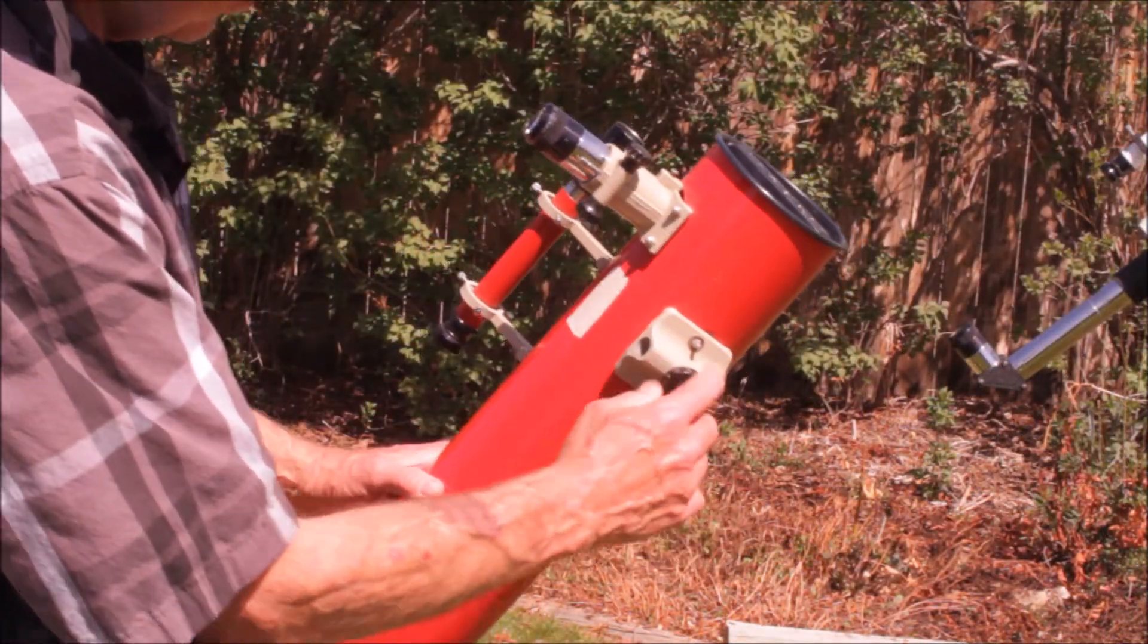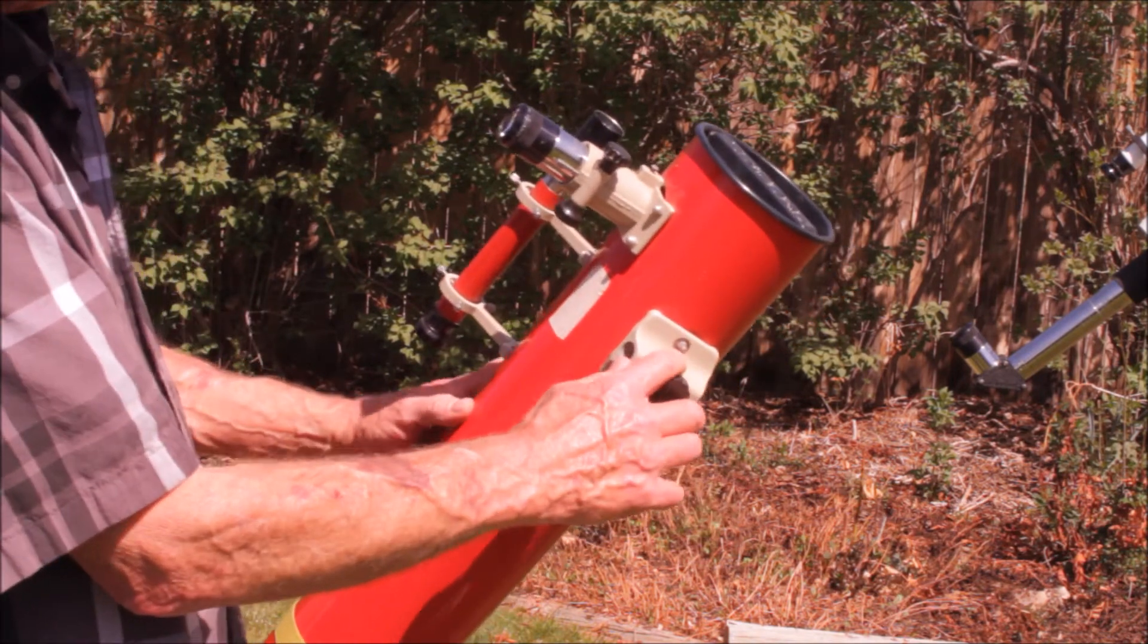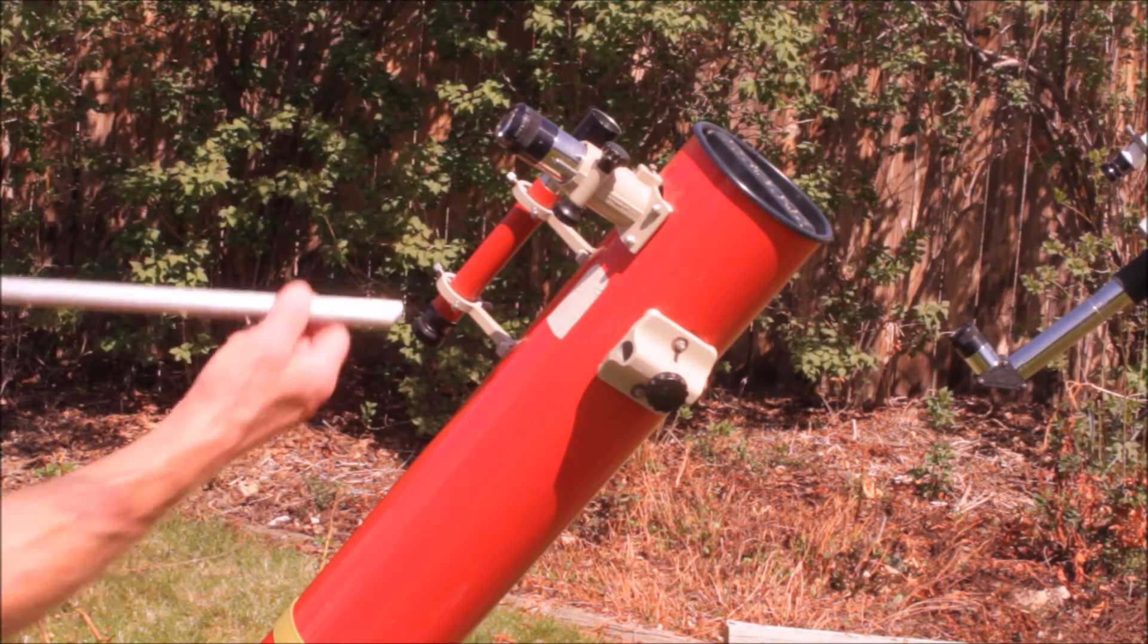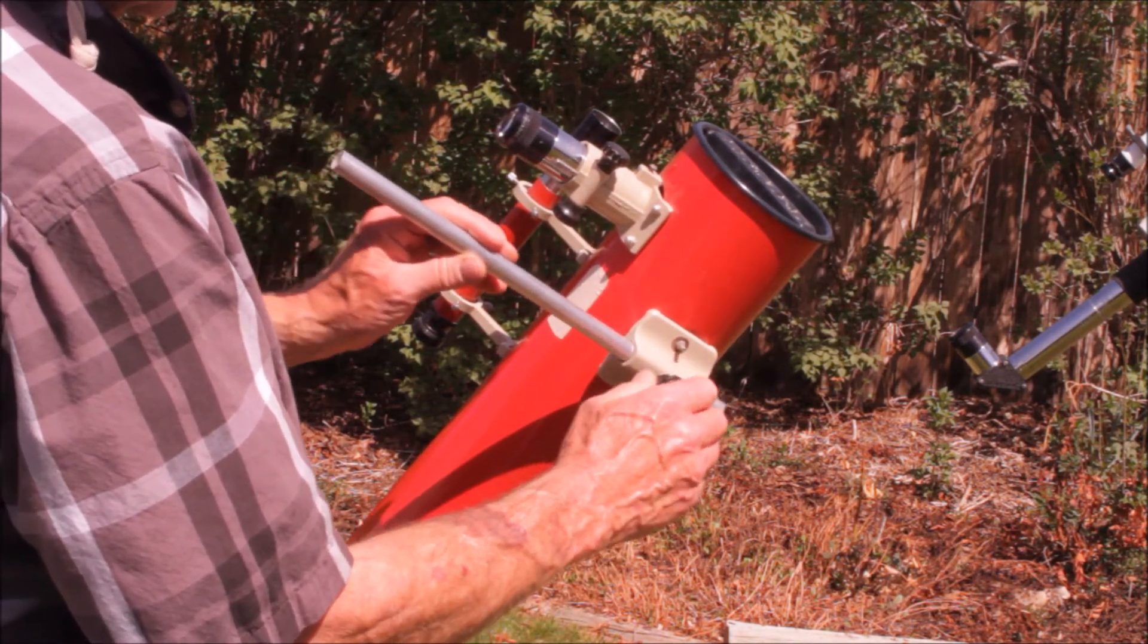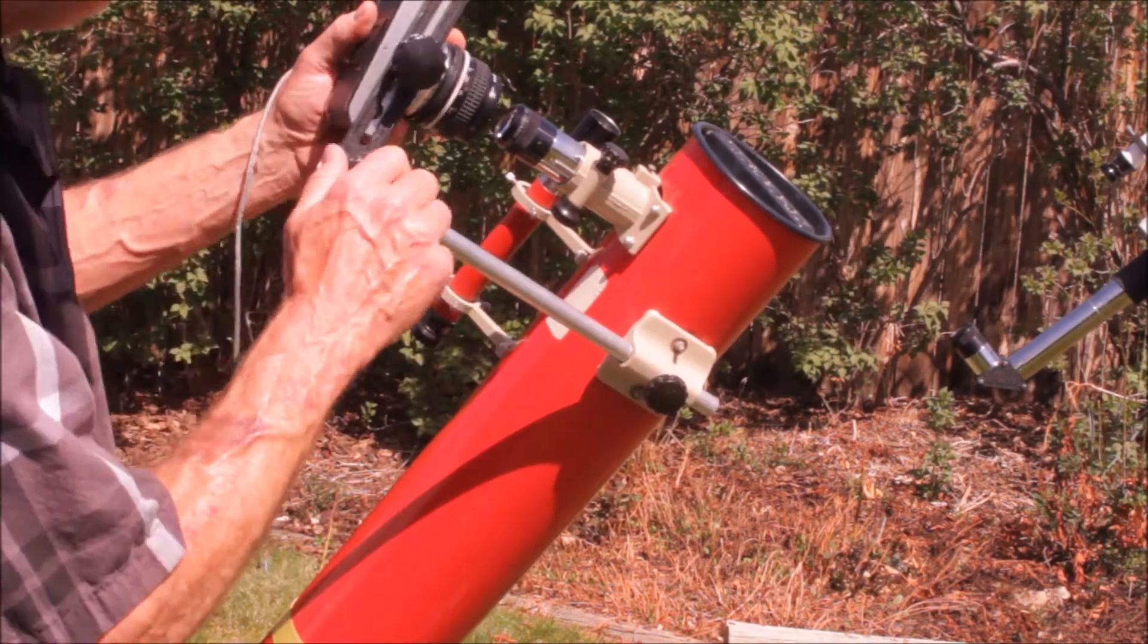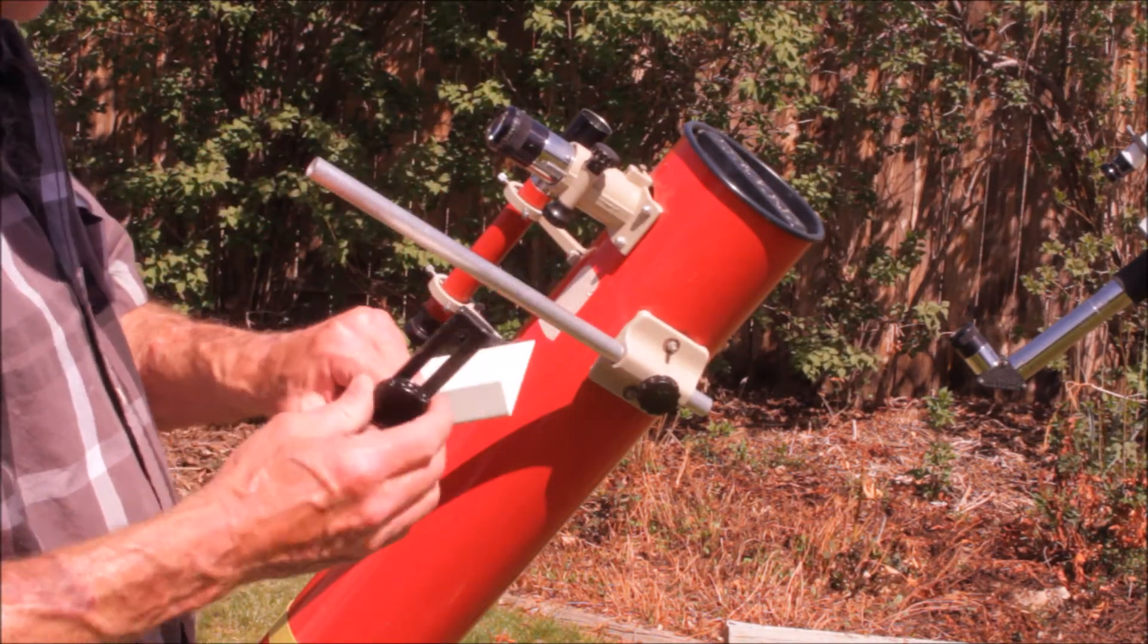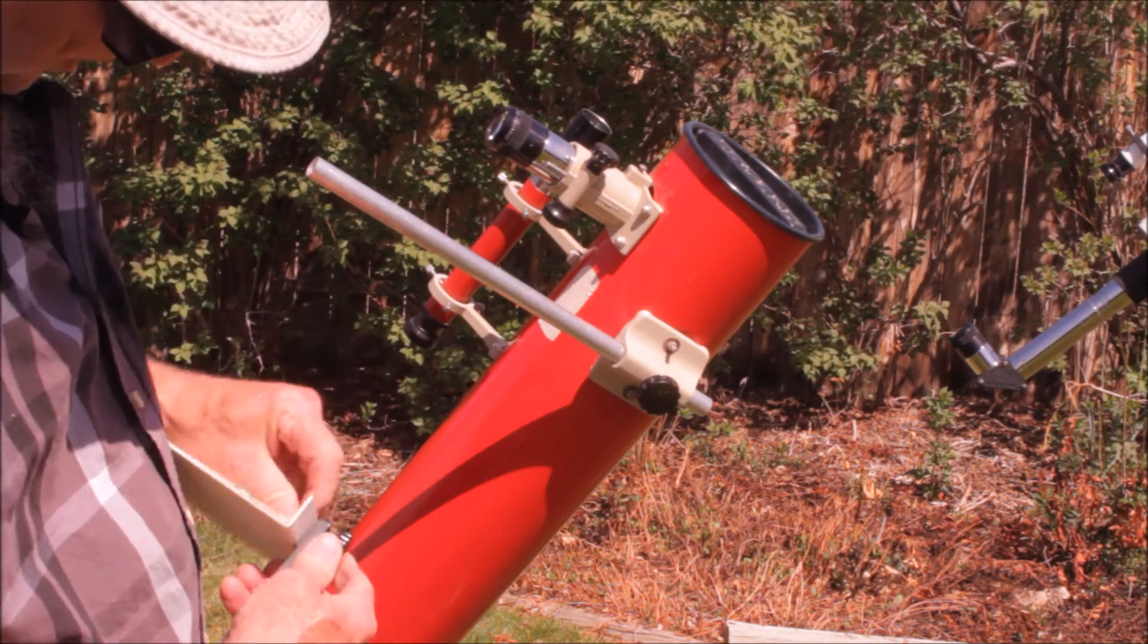Some of you may be wondering what this device is all about. Well, that is a device for mounting either a camera or a solar projection device. First thing you need is this little hunk of aluminum tube and do some photography with this thing. Another thing you can do with this is to mount a solar screen on it, just a little white metal.